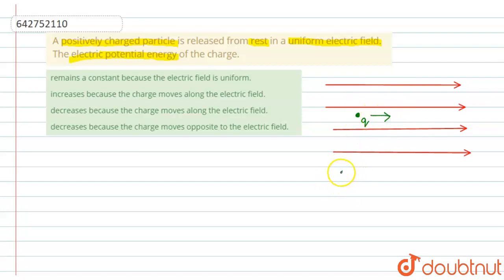Hence, we have E is equal to minus dV by dx. Now, dx is increasing because the charge is moving in the direction of the electric field.